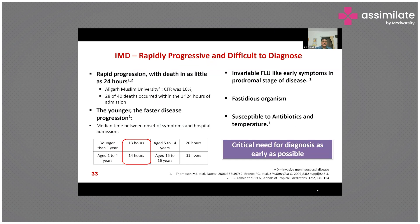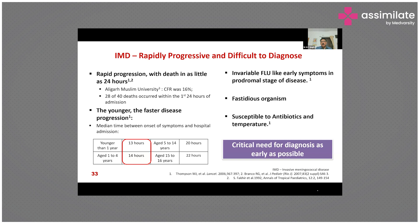This rapid progression makes diagnosis very difficult, as death can occur within 24 hours. In a study at Aligarh Muslim University, the case fatality rate was 16%, and 28 of 40 deaths occurred within the first 24 hours. The younger the child, the faster the disease progression — less than one year of age, it is 13 hours. Additionally, the organism is difficult to isolate and is highly susceptible to antibiotics and temperature, so once antibiotics are started, symptoms may be masked. There is therefore a critical need for diagnosis as early as possible to prevent mortality.